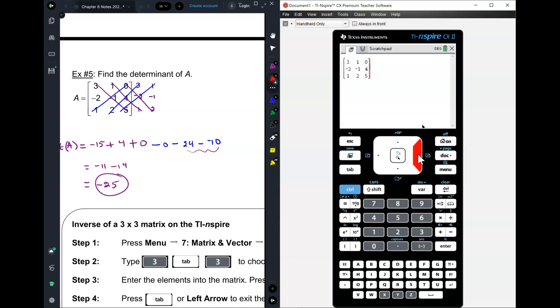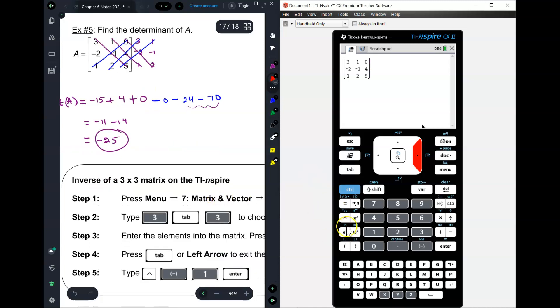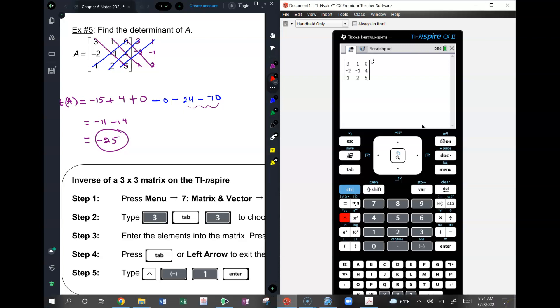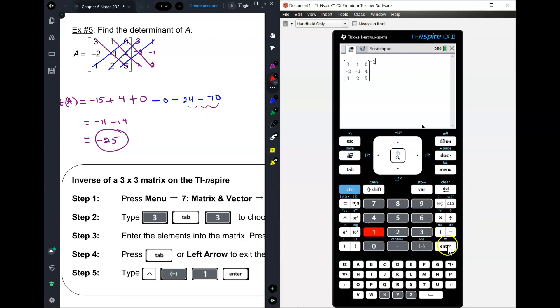Once you do this, don't press anything after the five. Press the right arrow button to exit out of the matrix. So you see how your cursor is not to the right of the matrix? Now, all you need to do is press this button. This is the carrot. It's to the very left of the four. So to the power of minus one. But remember to put the minus underneath the three, the negative, not the subtraction. Minus one. Enter. There's your inverse.